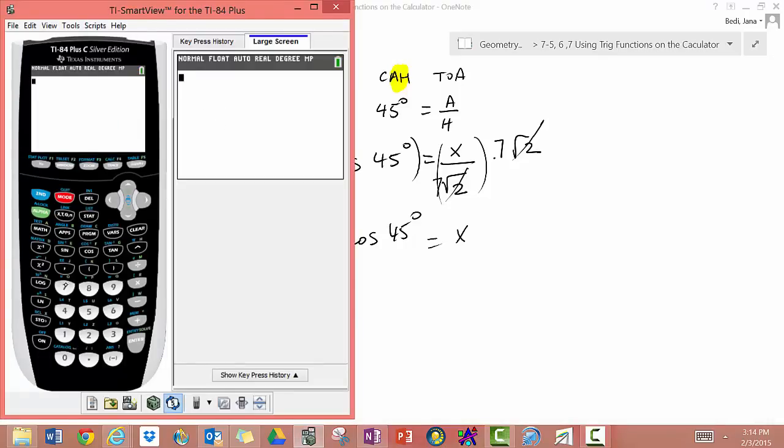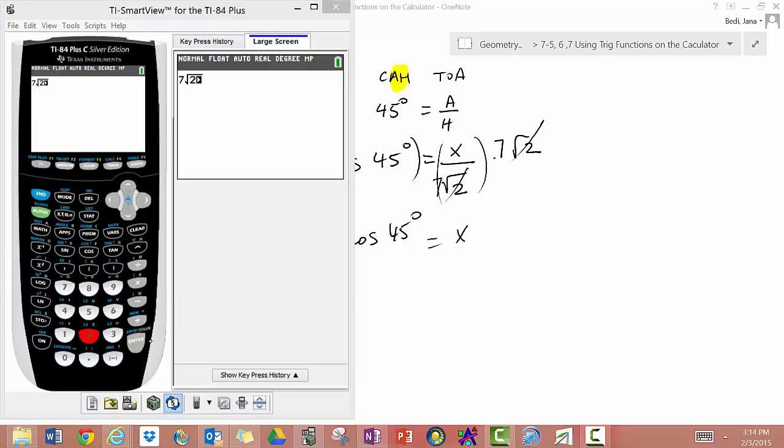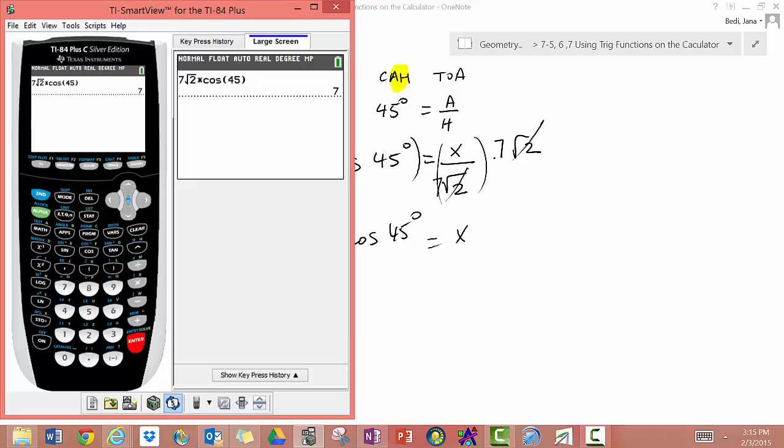I need to put in 7√2. Now, we have to be careful here because I'm still under the square root sign. So, I want to go ahead and get out of that. See that arrow? And it got me out from under the root sign. Times cosine 45. Let's press enter. So, I get 7.